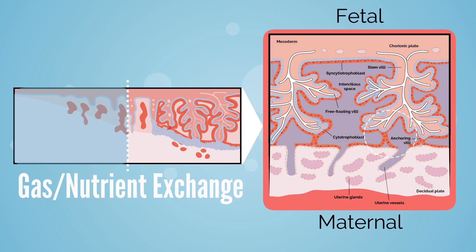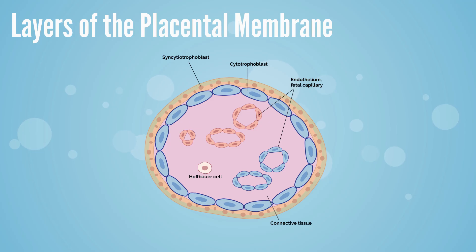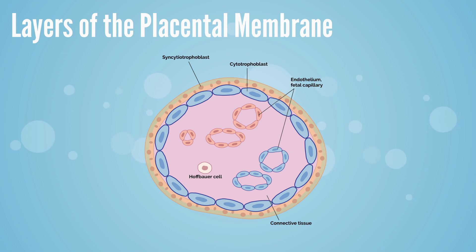Terminal villi serve as the region of main gas and nutrient exchange. They are surrounded by maternal blood in the intervillous spaces. There are four layers separating maternal and fetal blood: syncytial trophoblast, cytotrophoblast, villi connective tissue, and fetal capillary endothelium.